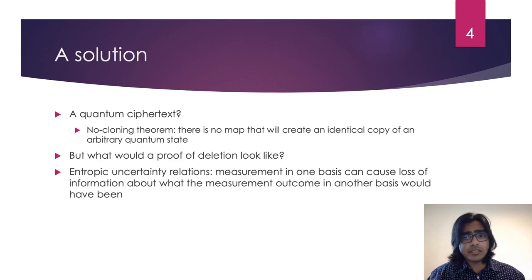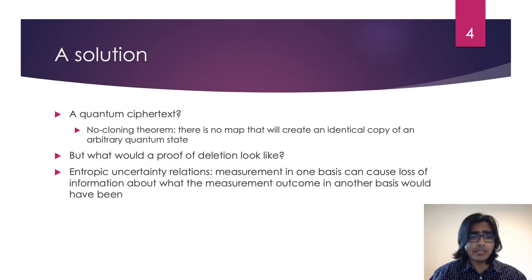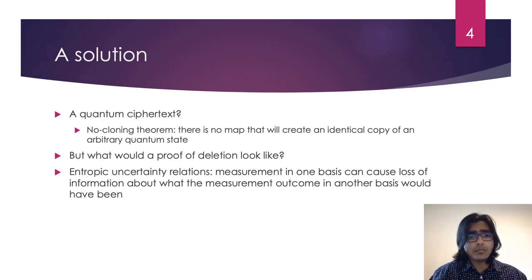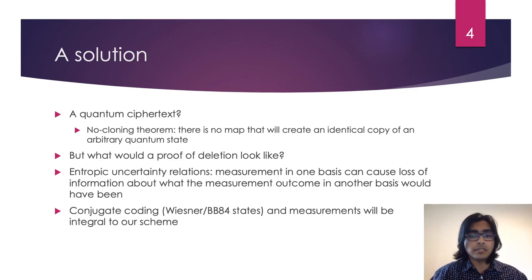This question can be answered through the use of entropic uncertainty relations. These relations state that if a qubit is measured in, for example, the computational basis, then information is lost as to what the measurement outcome would have been had it been done with the Hadamard. So we can use conjugate coding measurements in order to achieve the desired property.